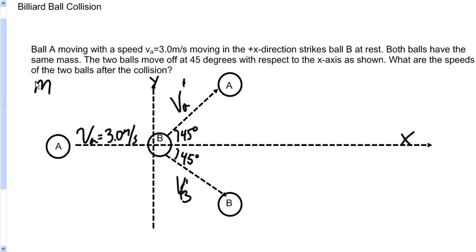The two balls move off at 45 degrees with respect to the x axis. You can see that ball A moves up in the positive y direction, and ball B moves off in the negative y direction at 45 degrees with respect to the x axis. We're asked to find the speeds of the two balls after the collision.